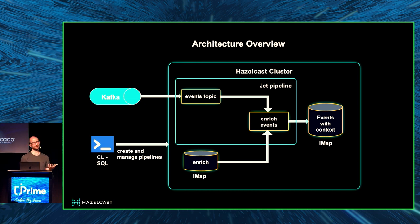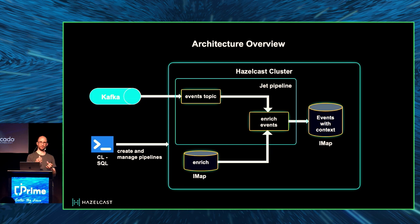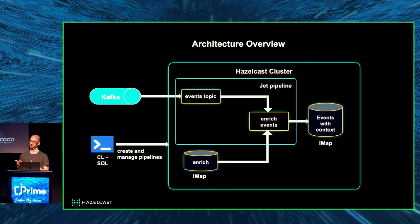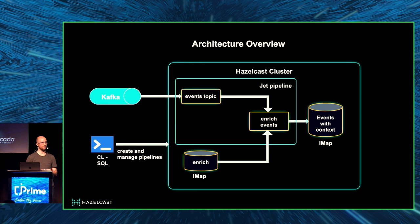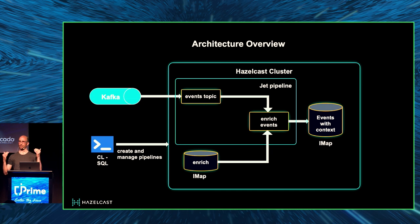Data enrichment should come from a different source — this is not the real-time data but the batch data. Once I have it in the application, I store it in an IMAP structure — basically a key-value map. I end up with two different structures: one map has the real-time data and another map stores the batch data, and I want to do the enrichment — the combination — to understand what's going on.